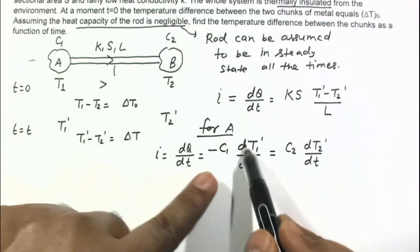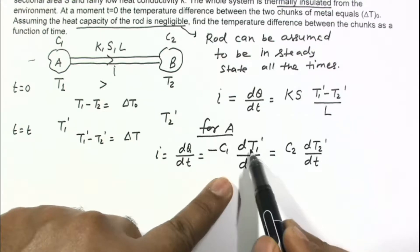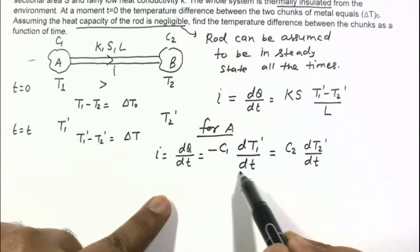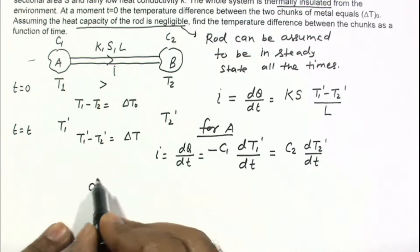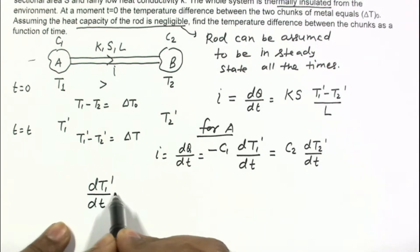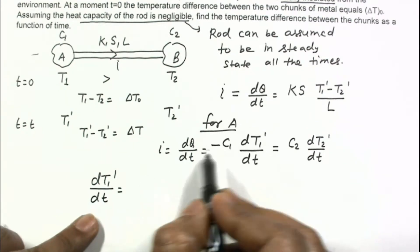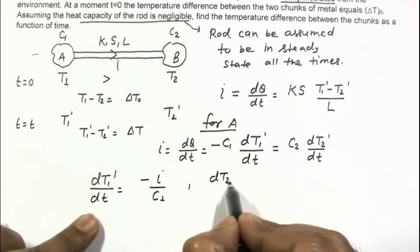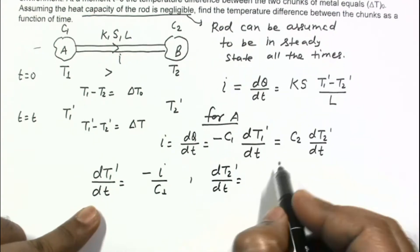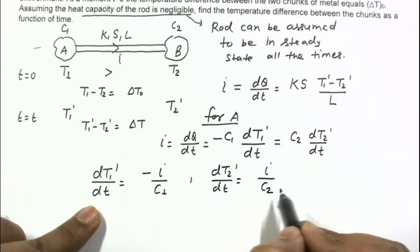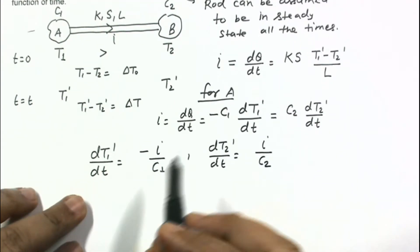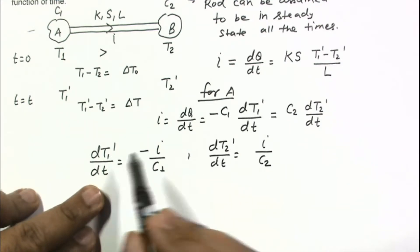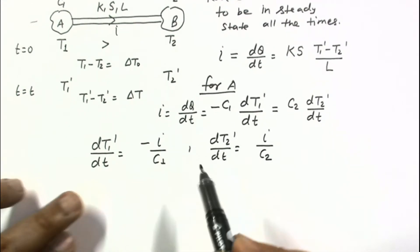From these two equations we get two different expressions: dT1 dash by dt equals minus I divided by C1, and similarly dT2 dash by dt equals I divided by C2. To get the temperature difference T1 dash minus T2 dash, we subtract these two equations.